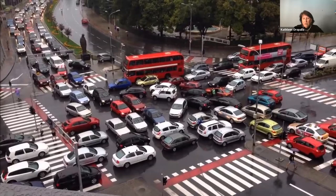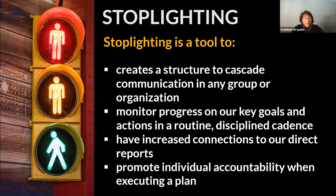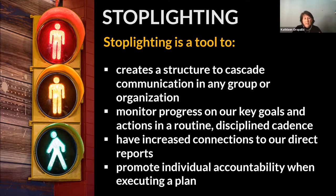Stoplights are a well-understood system that helps us know when to stop, pause, and go again. We'd like to borrow from that structure as we think about how we monitor progress and work with our improvement. Stoplighting is a tool that allows us to create a structure to cascade communication. It allows us to monitor progress on our key goals in a very routine, disciplined cadence, and it allows us to have increased connections to our direct reports — building relationships.